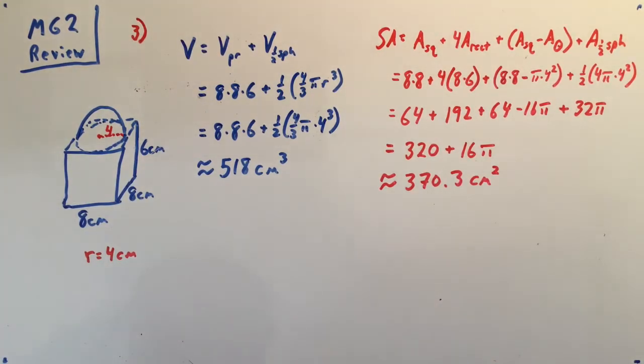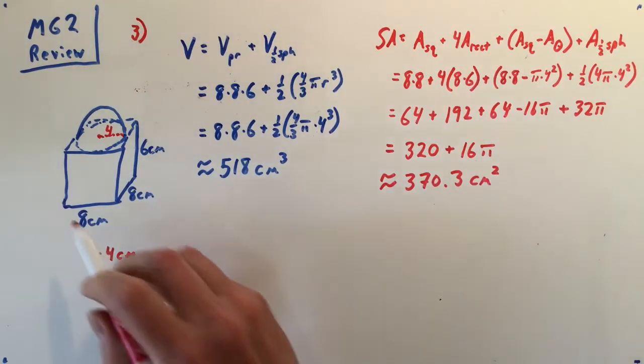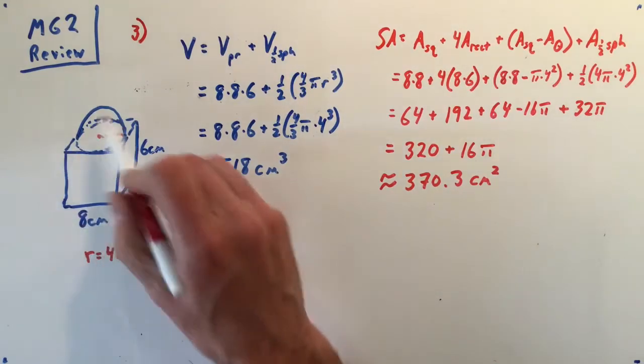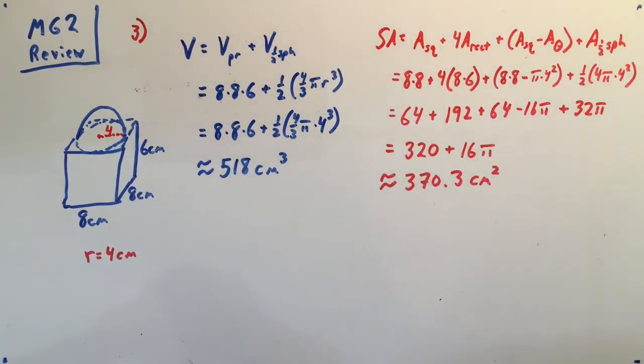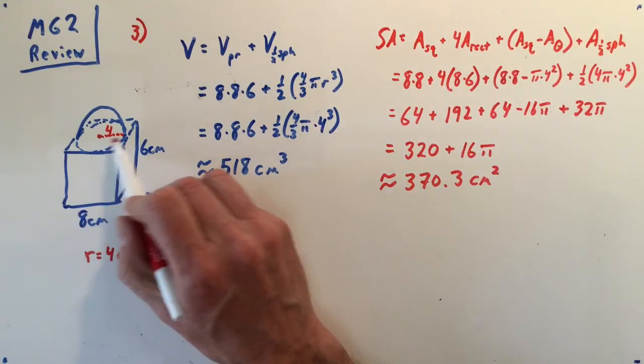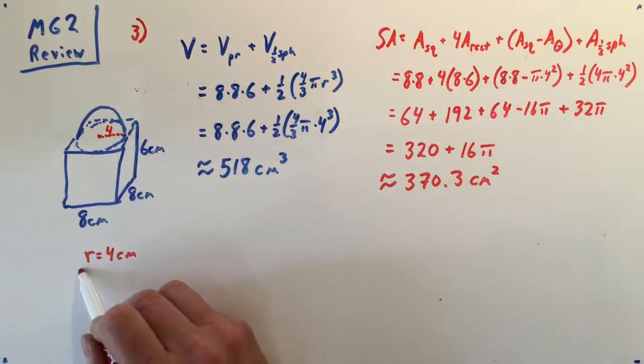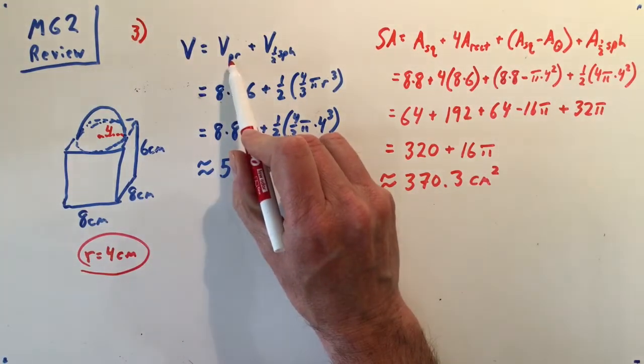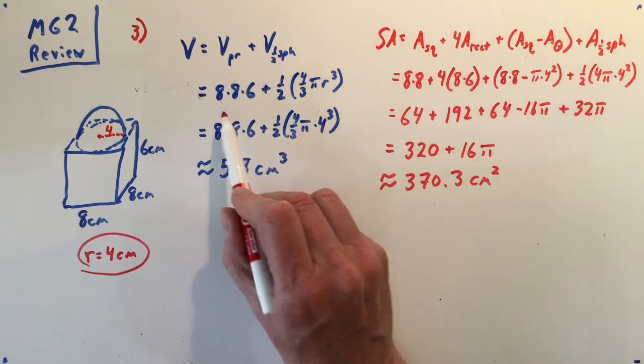Now the volume part is pretty easy, especially with these kind of figures, because all you got to do is find the volume of the prism and add the volume of the half sphere. The only tricky part is figuring out the radius. We know this base has to be a square because that's the only way a half sphere will fit in it so perfectly. Because it's a square that's eight by eight, that means the radius here is going to have to be four.